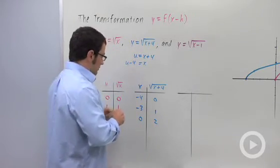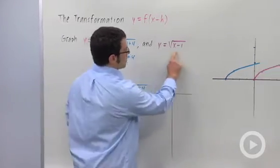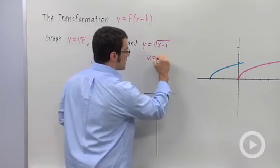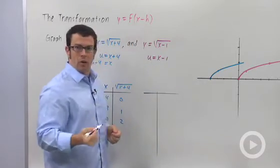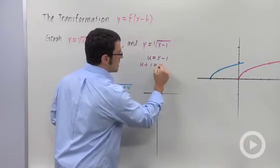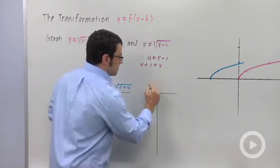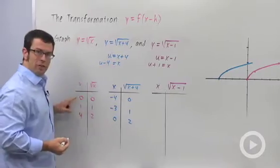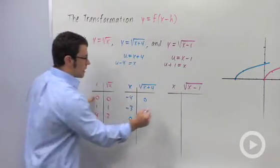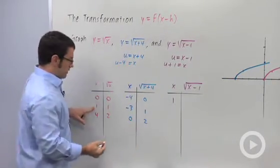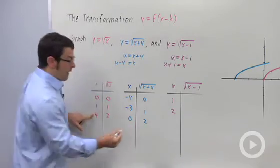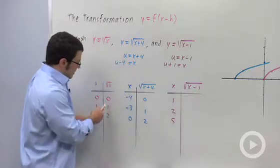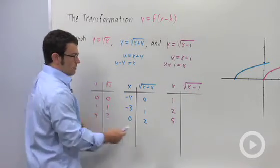Let's take a look at another example. Y equals root x minus 1. I'll make the same substitution: u equals x minus 1. And I add 1 to both sides. U plus 1 equals x. So, my x values I get by adding 1 to my u values here. So I'll add 1, and I get 1. Add 1, I get 2. Add 1, I get 5. But this is just the square root of u, so nothing happens to the root u values. I just copy them over: 0, 1, and 2.